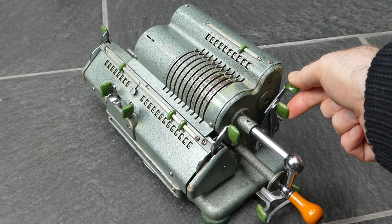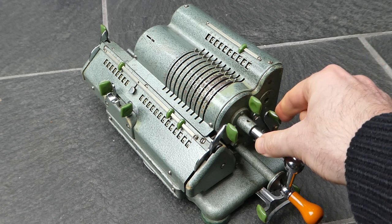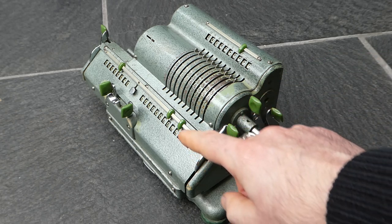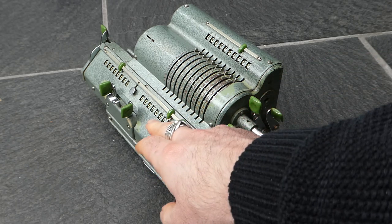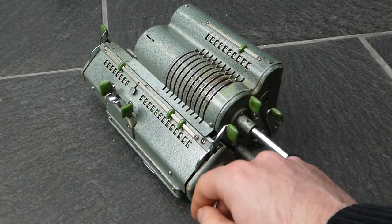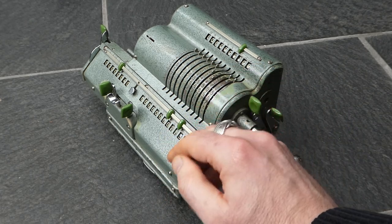Then pull this back to activate the mechanism. Now the output register is connected up to the input levers so that when you clear it the number transfers.